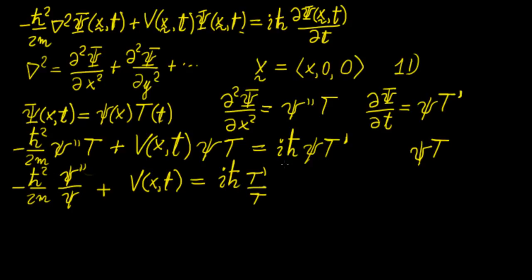We set both sides equal to some constant E. We don't yet know what E is, but we assume both sides are constant since we have just separated them. Because the spatial part contains the generic potential term V which we haven't yet defined, we start with the time part, which is much easier to solve.